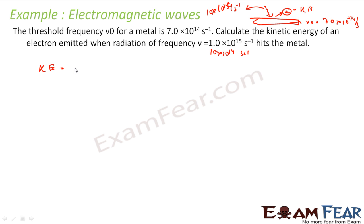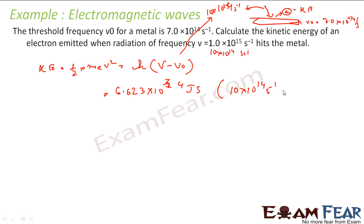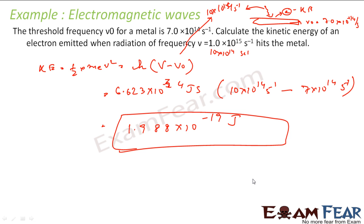Kinetic energy = h(ν − ν₀), where ν is the frequency of the radiation and ν₀ is the threshold frequency of the metal. Putting in values: h = 6.626 × 10⁻³⁴ J·s, ν = 10 × 10¹⁴ s⁻¹, ν₀ = 7 × 10¹⁴ s⁻¹. Solving this gives 1.988 × 10⁻¹⁹ joules — that is the kinetic energy of the electron.